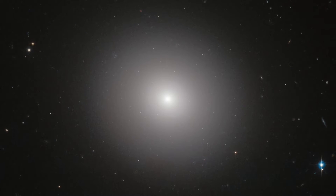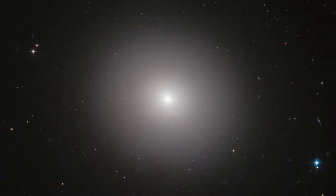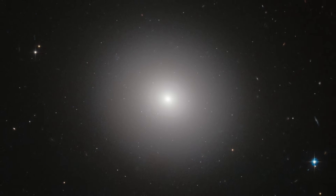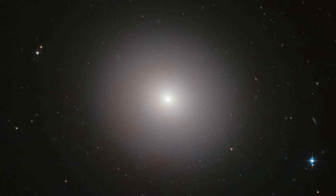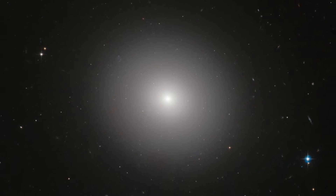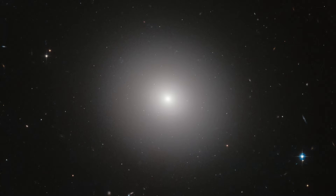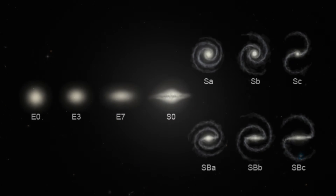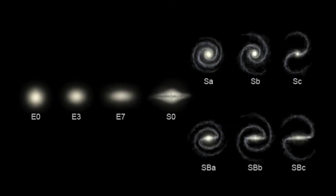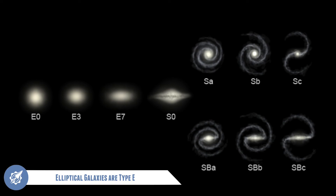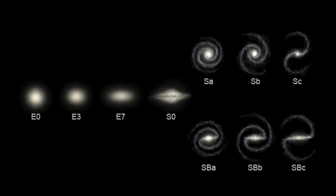Elliptical galaxies are often very large, very old, and contain little gas and dust. This means there is not a lot of star formation within these galaxies. The Hubble classification scheme identifies elliptical galaxies as the letter E, followed by a number representing the degree of ellipticity.